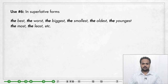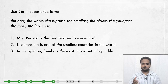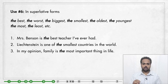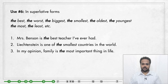The next use is superlative forms — expressions like 'the best,' 'the worst,' 'the biggest,' 'the smallest,' and so on. For example: 'Mrs. Benson is the best teacher I've ever had,' 'Liechtenstein is one of the smallest countries in the world,' and 'In my opinion, family is the most important thing in life.' Remember that these are fixed — you must use 'the' in all superlative forms.